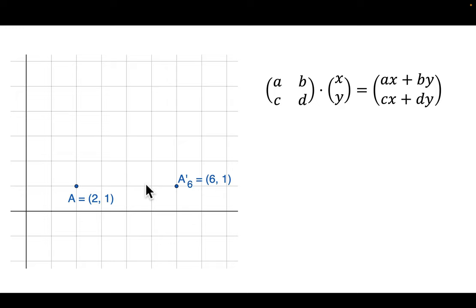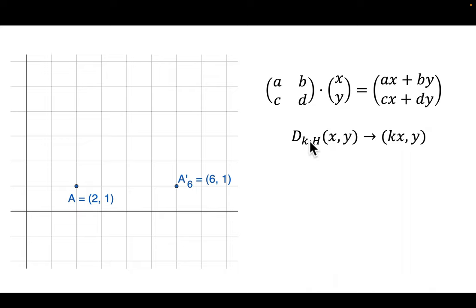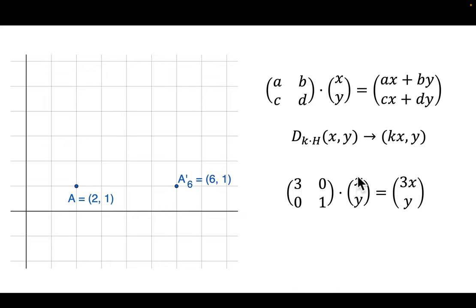Here are the dilations — our first examples with something other than 1s and 0s. Point A is transformed and x goes from 2 to 6, so we have a horizontal dilation by a scale factor of 3. We're multiplying our x-value by k. The matrix [3, 0; 0, 1] times (x, y) gives (3x, y). In our case: 3 times 2 = 6, and 1 times 1 = 1. That's the matrix for a horizontal dilation.